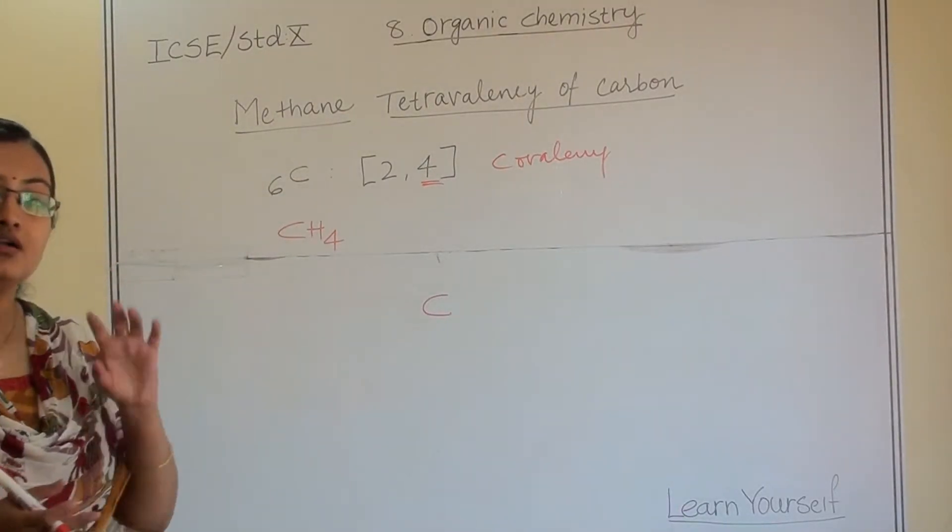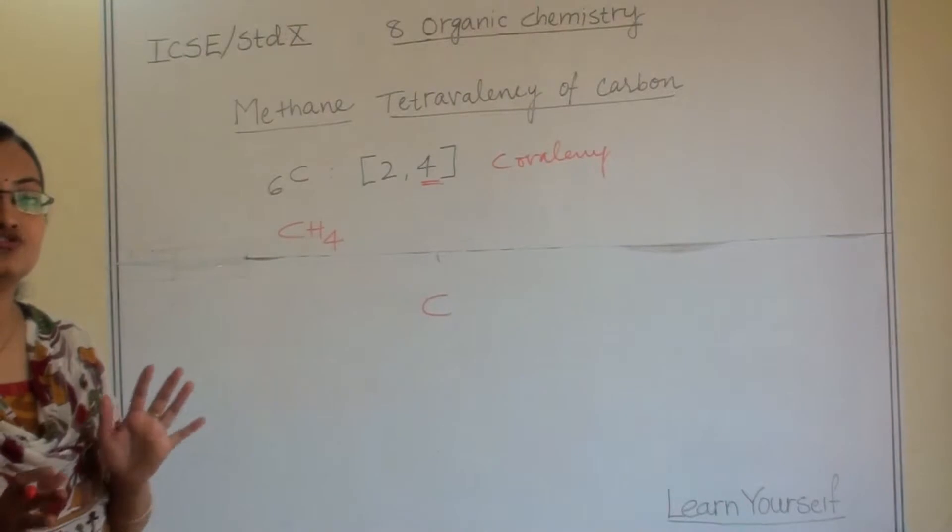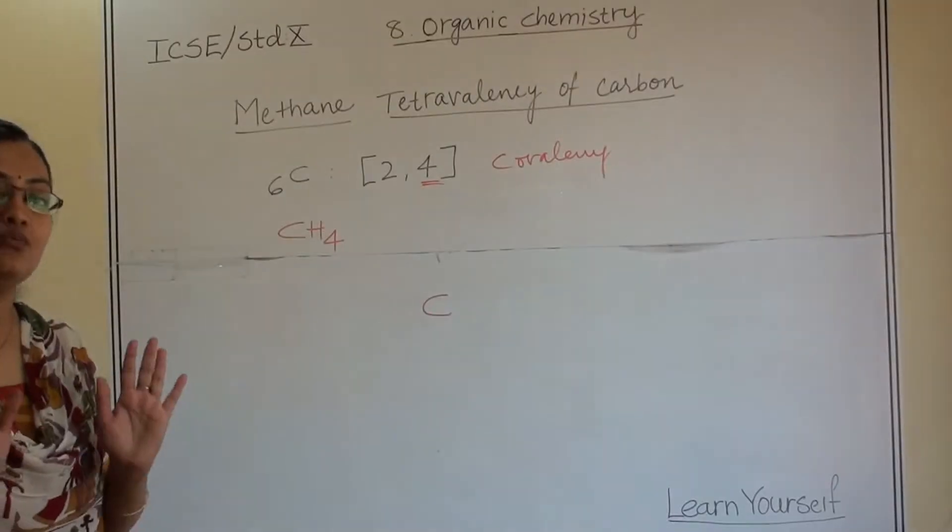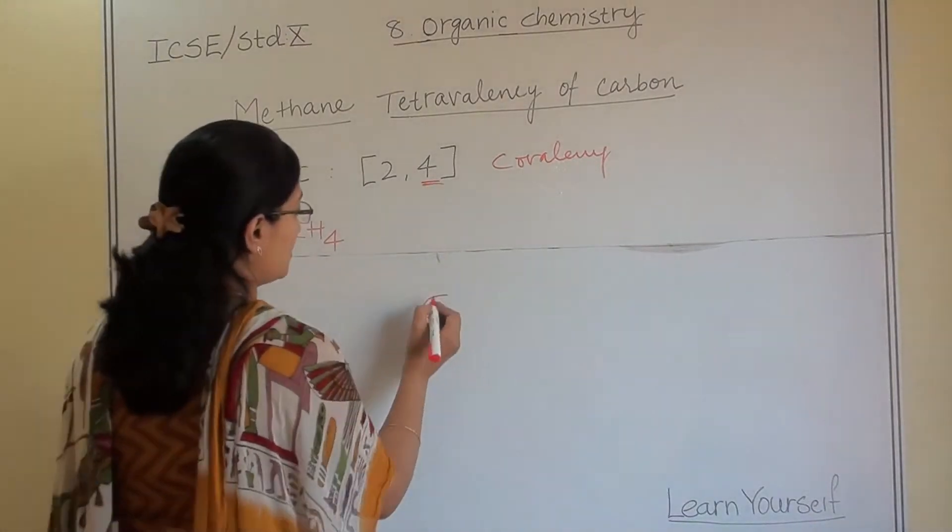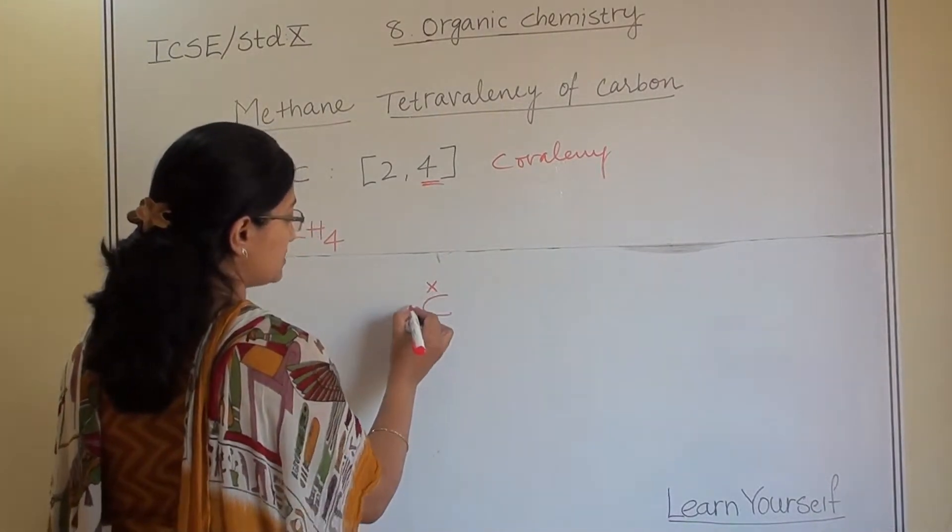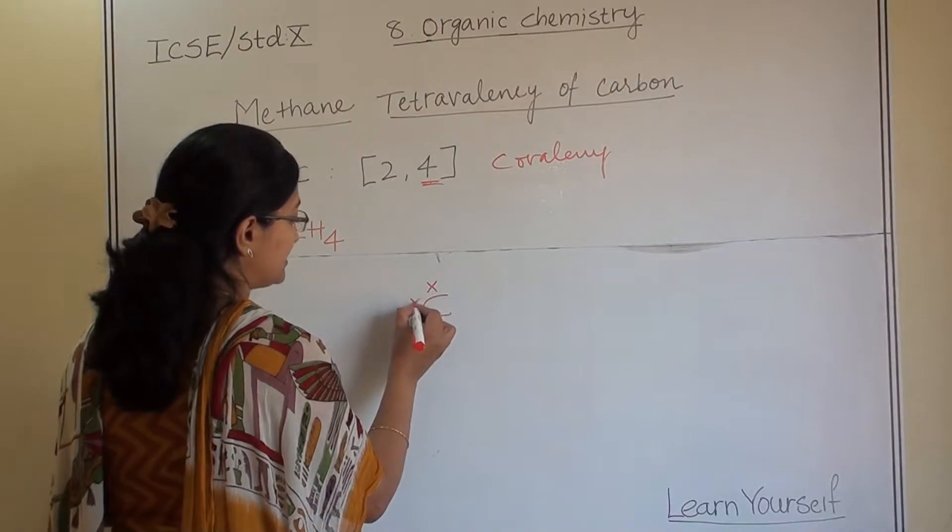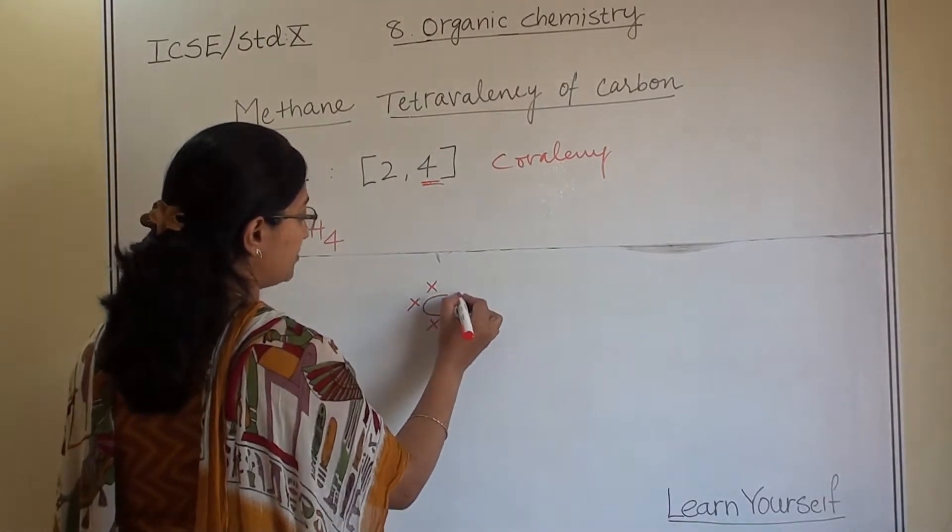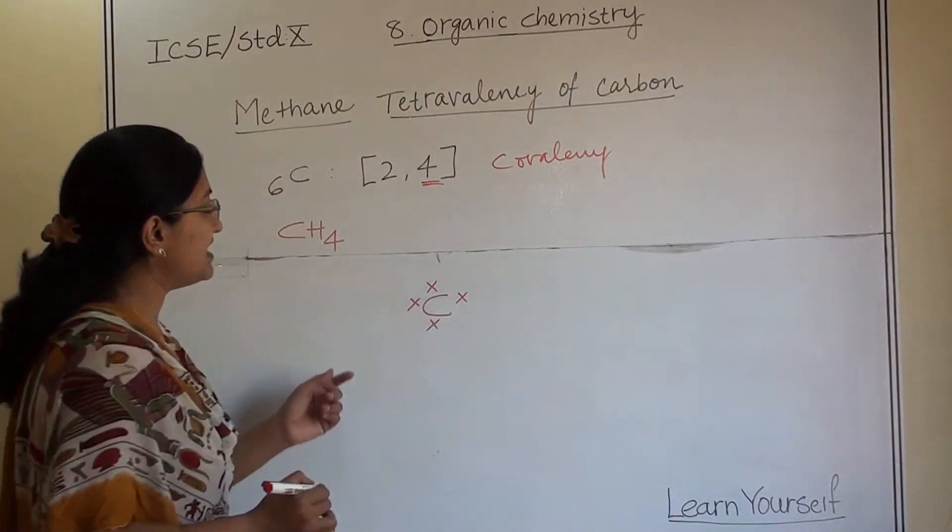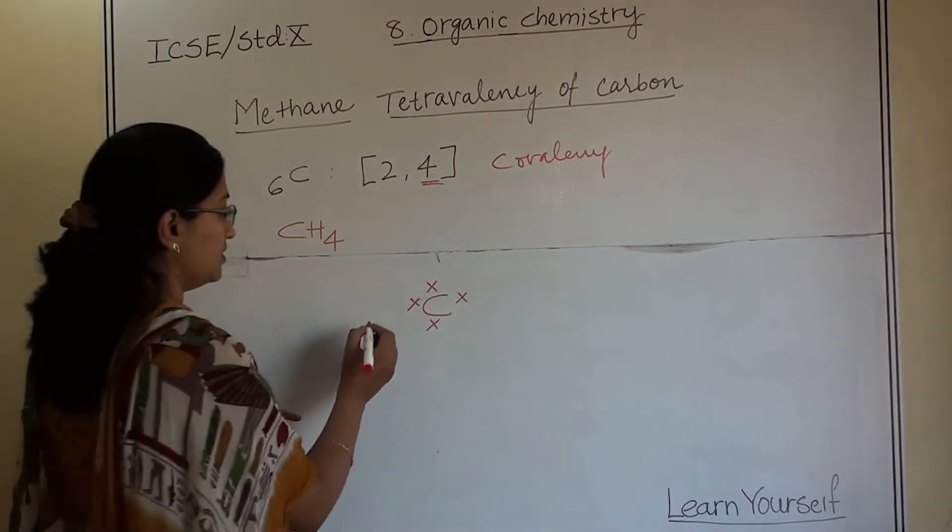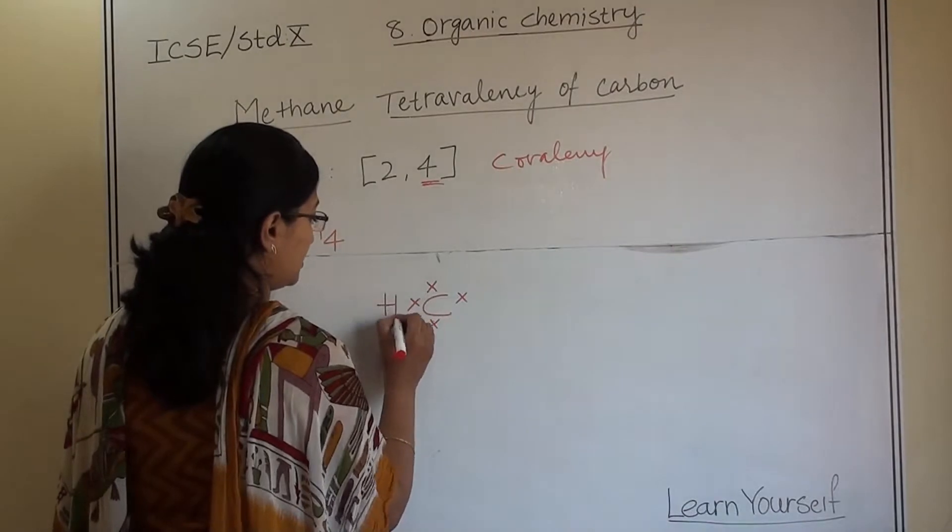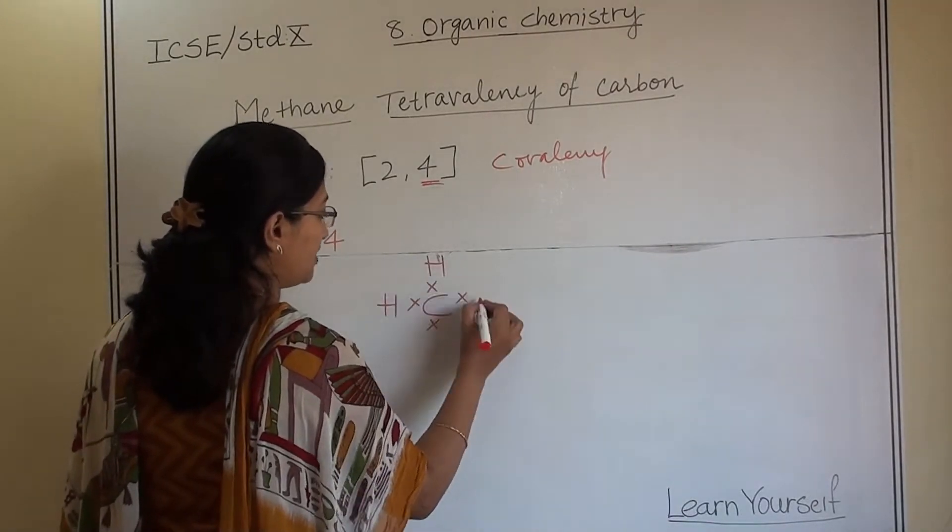When we are drawing a dot diagram of any structure, we are showing only valence electrons. What are the valence electrons? 4. So I am showing here as a cross, one valence electron of carbon each. And it has been attached with 4 hydrogen atoms. So here are 4 hydrogen atoms.